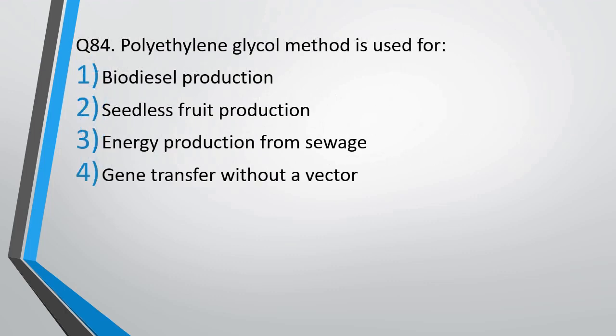Question number 84: The polyethylene glycol method is used for — biodiesel production, seedless fruit production, energy production from sewage, or gene transfer without a vector? The correct answer is option 4 — it is used for gene transfer without a vector.